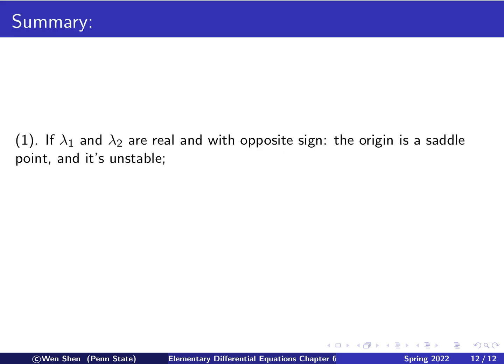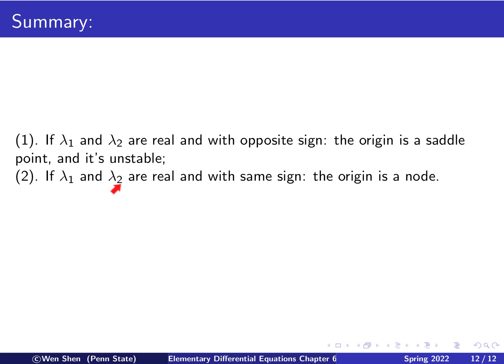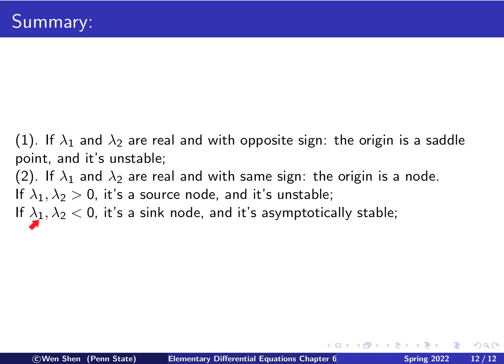To summarize the cases considered so far: if lambda 1 and lambda 2 are real with opposite signs, the origin is a saddle point and is unstable. If they are real, distinct, and with the same sign, the origin is a node: if both are positive, it's a source (unstable); if both are negative, it's a sink (asymptotically stable). This completes the summary for two real distinct eigenvalues. Next time we will look at other more complicated situations. That's all for this video — I hope you enjoyed it, and I'll see you next time.